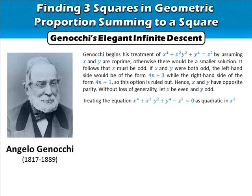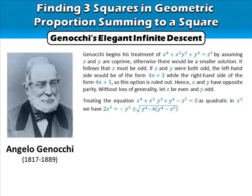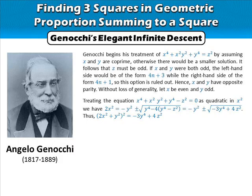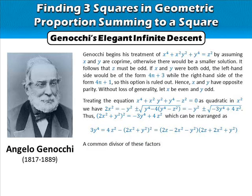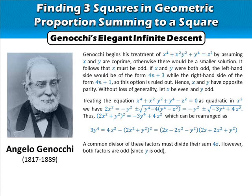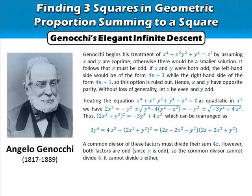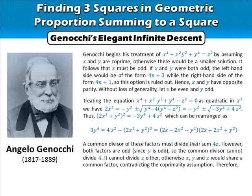Without loss of generality, let x be even and y odd. Treating the equation as quadratic in x², we can solve it, and after a few steps find that (2x² + y²)² = -3y⁴ + 4z², which can be rearranged as 3y⁴ equals a difference of squares. A common divisor of these factors must divide their sum 4z. However, both factors are odd since y is odd, so the common divisor cannot divide 4. It cannot divide z either, otherwise x, y, and z would share a common factor, contradicting the coprimality assumption.